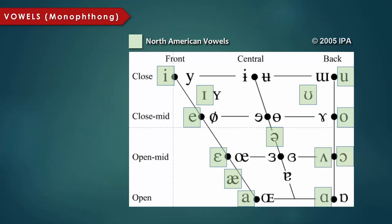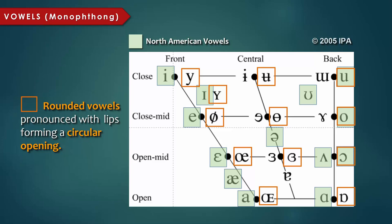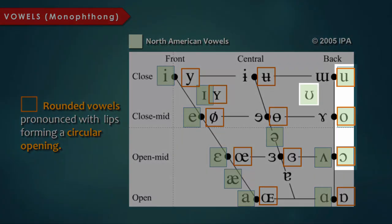Where pairs of symbols occur, rounded vowels are represented on the right-hand side, while unrounded vowels are represented on the left-hand side. It is worth noting that the only rounded vowels used in North American English are all back vowels.